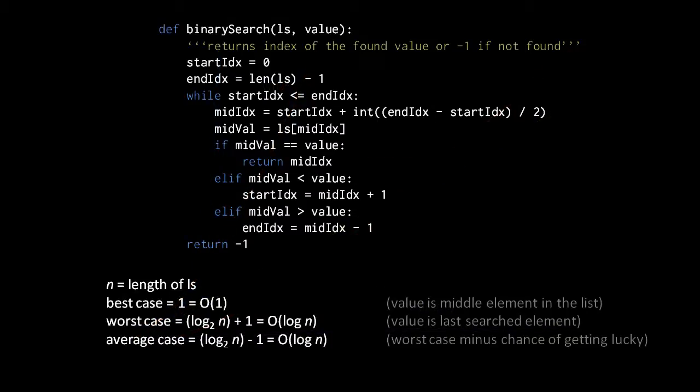So whereas the best case for binary search is one, a constant time search, because it may happen that just there in the middle is the value we're looking for. But then in the worst case, the time complexity function works out to be log base 2 n plus 1, and in the average case, log base 2 n minus 1. Expressed in Big-O notation, 1 becomes simply O(1), log n plus 1 becomes simply log n because the plus 1 is not really going to change the shape of the curve. We generally leave out the base 2 part of log n because that's just understood. And in the average case, log base 2 n minus 1 becomes O(log n). We just drop the minus 1 because that just slightly shifts the curve without really changing the shape.